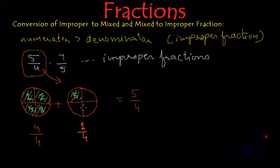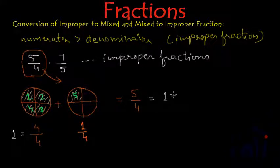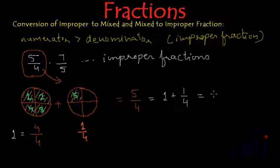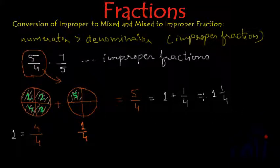From the first circle we have taken 4 out of 4, and from the second circle we have taken 1 out of 4. So this together is 5 out of 4. The first circle gives us 1 whole, and from the second circle we have taken 1 out of 4. This can be represented as 1 + 1/4, or as the mixed fraction 1¼. That is the meaning of 5/4 and how it converts to a mixed fraction.